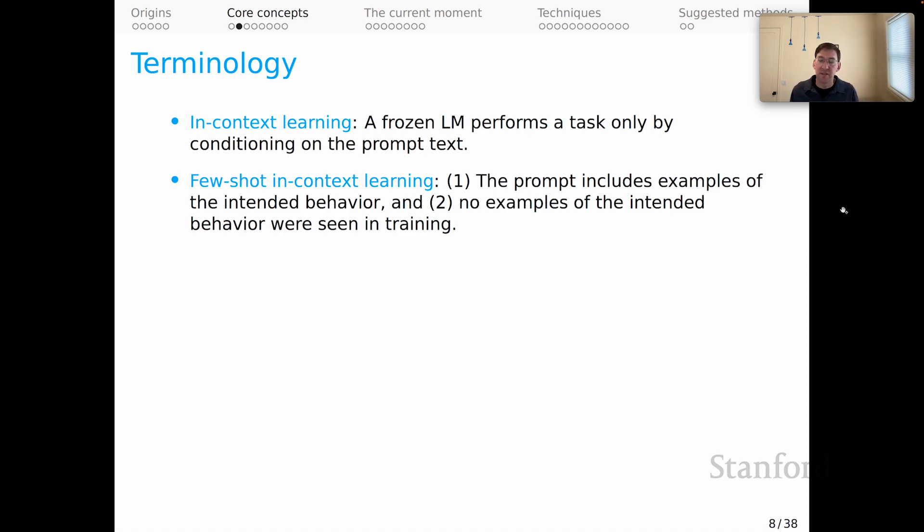Few-shot in-context learning is a special case of that. This is where the prompt includes examples of the intended behavior, and no examples of the intended behavior were seen in training. Of course, we are unlikely to be able to verify too.